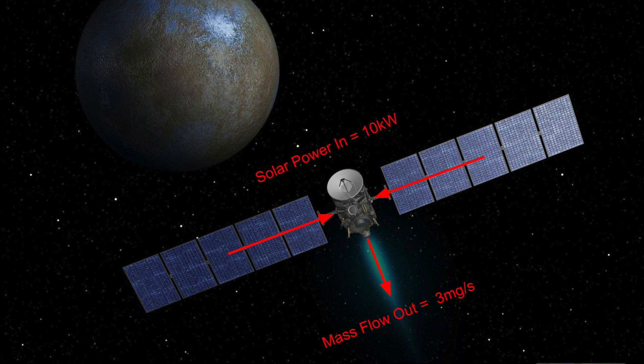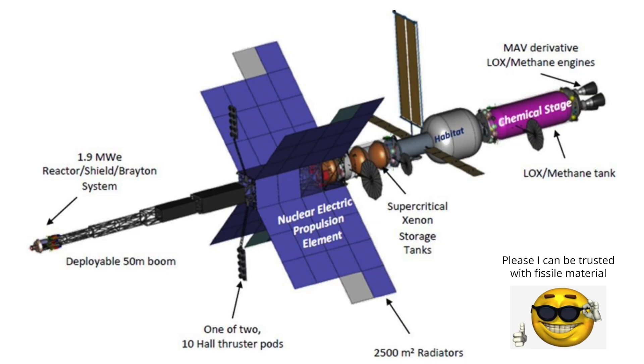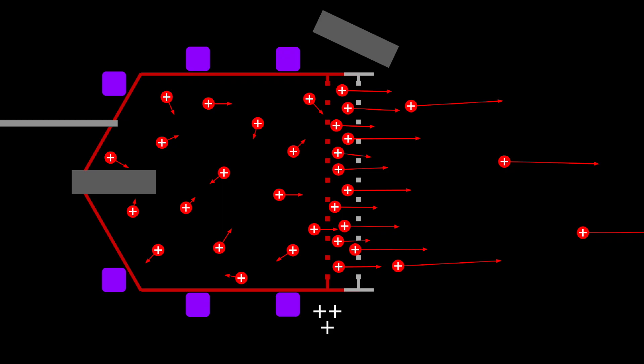In the future, we may be able to get around this by using beefier power supplies like a nuclear reactor, but the second problem is more fundamental. If we try to push more ions through our thruster per second to create more thrust, eventually there will be so many positively charged ions in the acceleration region at any time that they would repel any new ions trying to enter it.